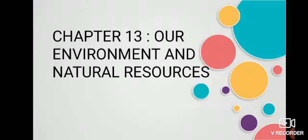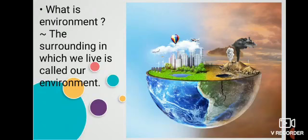So first of all, what is environment? Environment means anything that surrounds us. It can be living biotic or non-living abiotic things. The circumstances, objects, or conditions by which one is surrounded is called environment. Here you can see in this picture also.